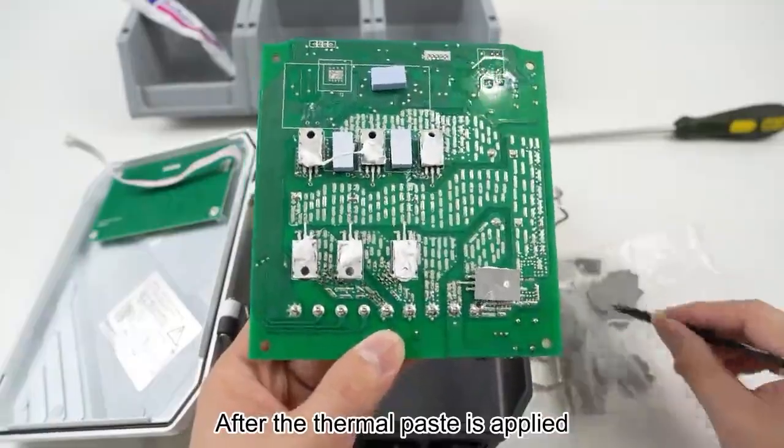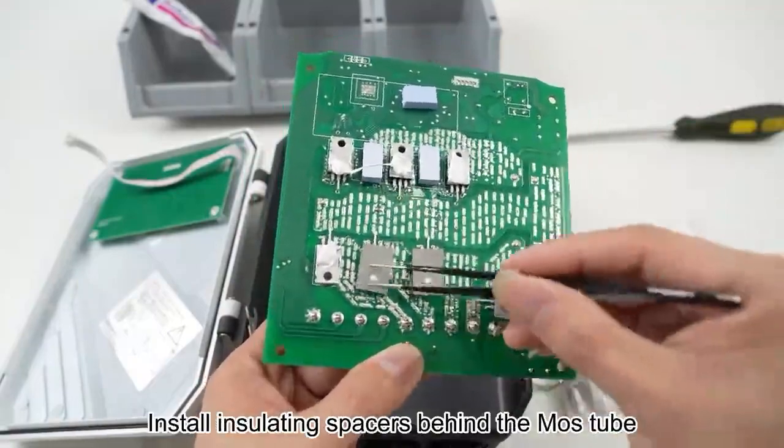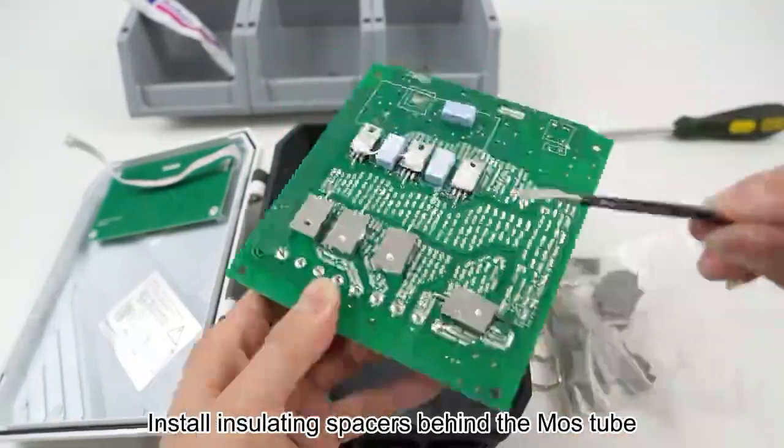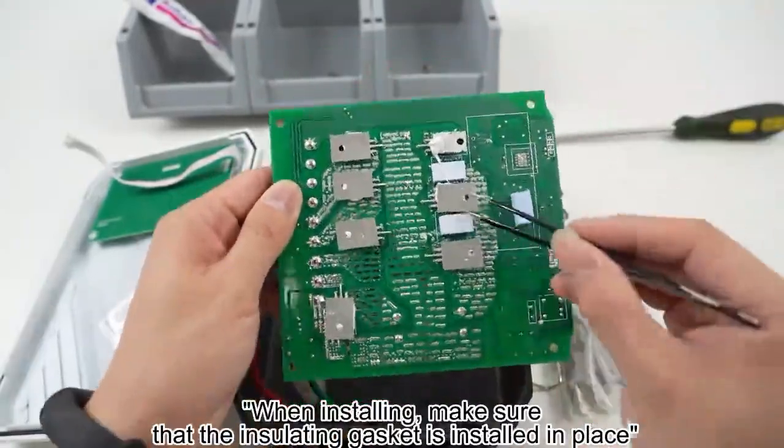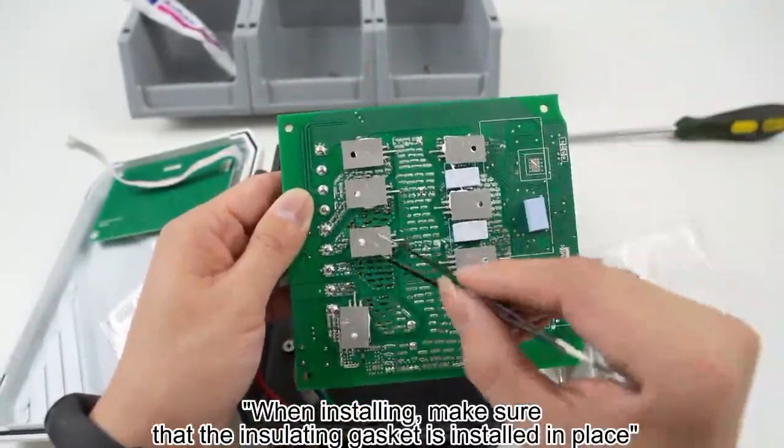After the thermal paste is applied, install insulating spacers behind the MOS tube. When installing, make sure that the insulating gasket is properly in place.